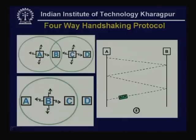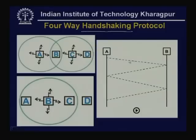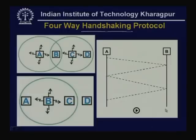This is known as a four-way handshaking protocol: Request to Send, Clear to Send, Data, and then Acknowledgement. This is known as Carrier Sense Multiple Access with Collision Avoidance. The data packet does not suffer collision in any situation. This protocol is used in wireless LAN, as we shall discuss in detail later on.